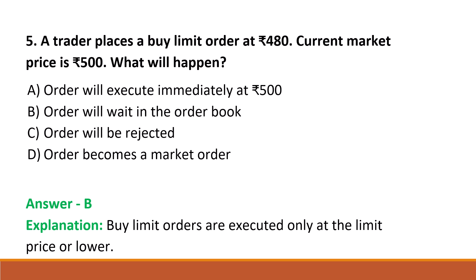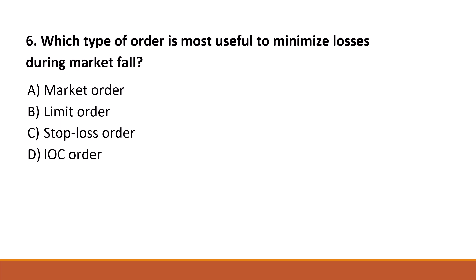Next question: which type of order is most useful to minimize losses during a market fall? Option A: market order. Option B: limit order. Option C: stop loss order. Option D: IOC order. The correct answer is Option C, stop loss order.